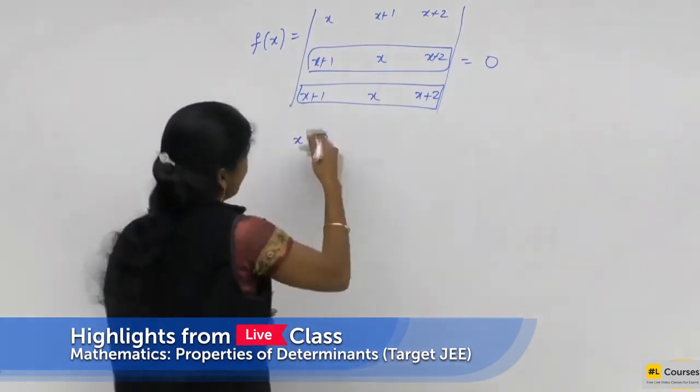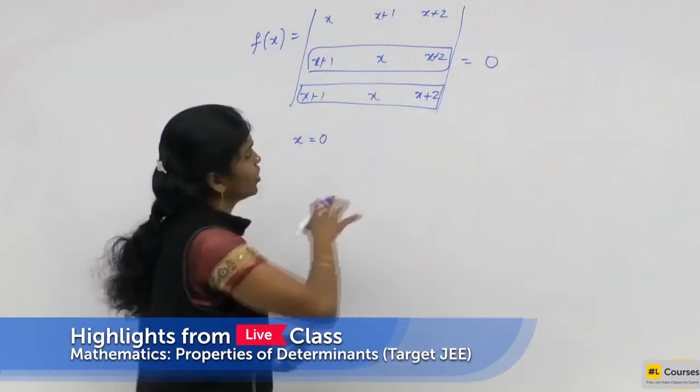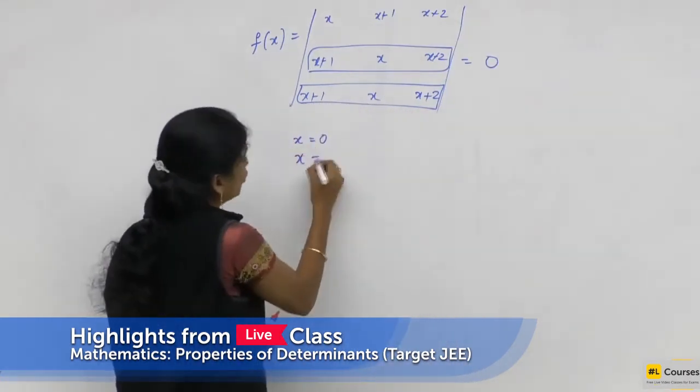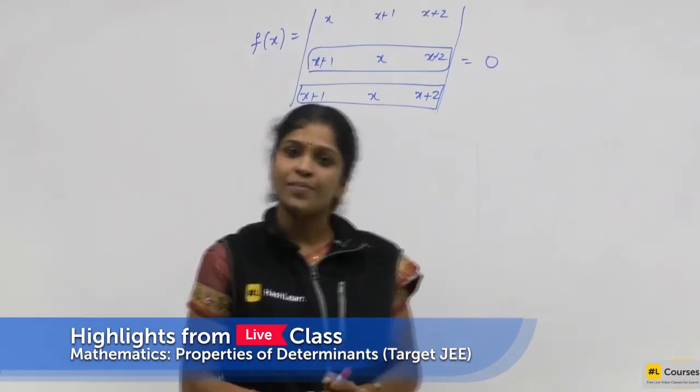But suppose if you substitute, if I put x is equal to 0, also this determinant becomes 0. If you put x is equal to 2, also the determinant becomes 0.